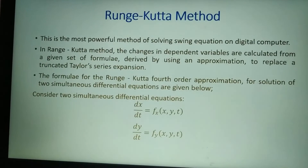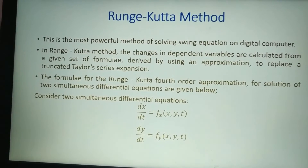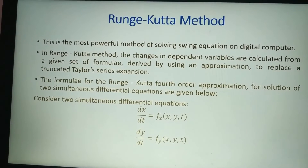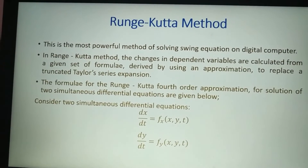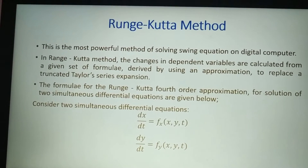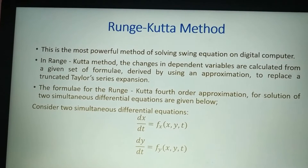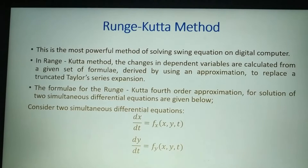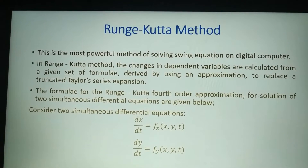The Runge-Kutta method is the most powerful method for solving the swing equation. In this method, the changes in dependent variables are calculated from a given set of formulae derived by using an approximation to replace a truncated Taylor series expansion, as was done in the modified Euler method.